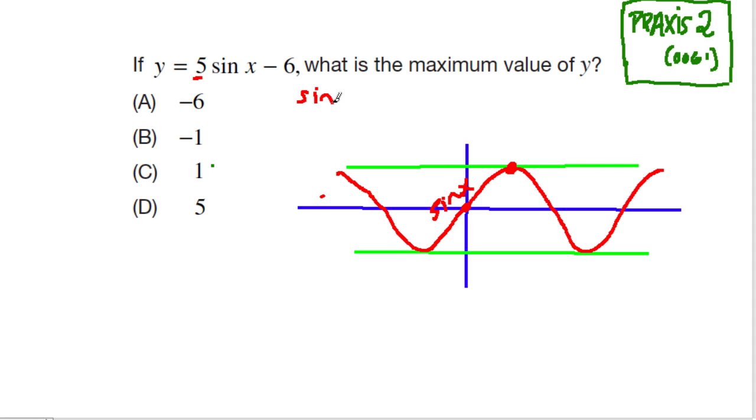So sine of x, we're looking for a maximum value, the biggest value that could take on is 1. So let's assume we've got the biggest value, sine of x equals 1, and just substitute that number into the equation. So y equals 5 times 1 minus 6, which is 5 minus 6, or negative 1. So the answer here is just negative 1. That's the biggest value y could ever have.